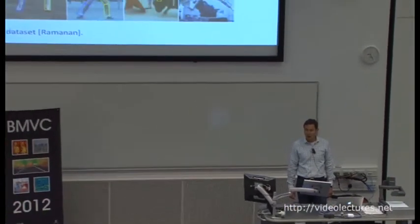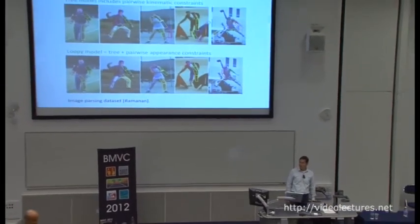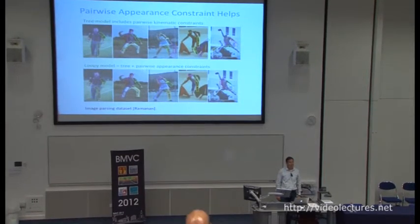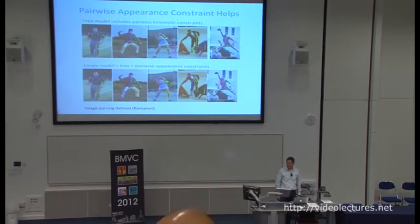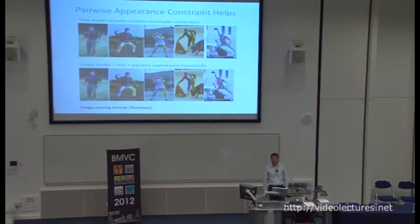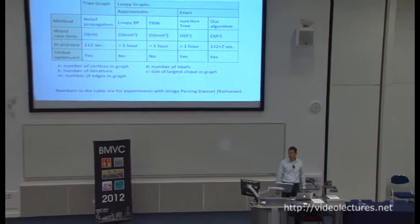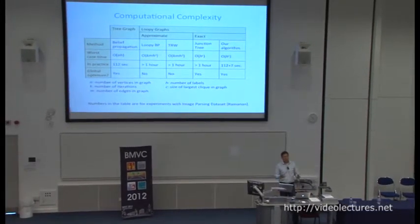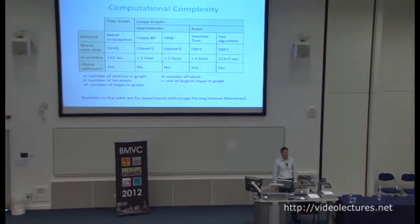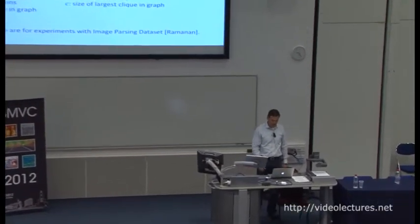If you use pairwise constraints, here we have examples from the image parsing dataset of Ramanan. In the upper row you see results from a simple kinematic tree-based model, and in the bottom row you see results using a simple pairwise appearance constraint for the arms and legs. But there's a catch — when you use a non-tree model, the computational complexity of inference is increased. With a tree graph we can use dynamic programming, and the complexity is further reduced using the distance transform of Pedro Felzenszwalb and Dan Huttenlocher.